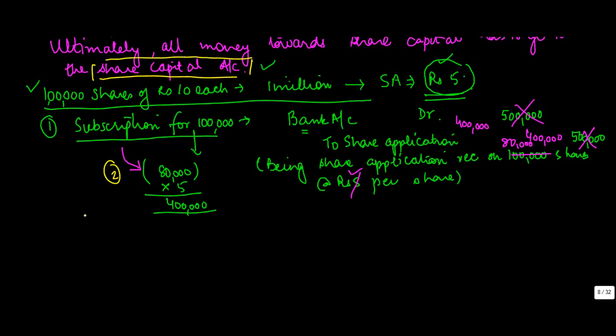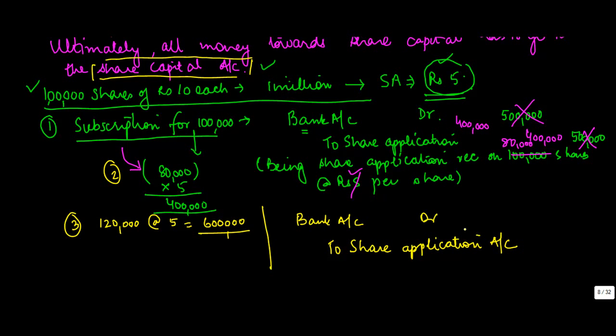Now the third situation could be you got actually money for 120,000 shares at the rate of rupees 5, which is 600,000. So in this case, what will happen, you got bank account debit to share application. So the first entry will be basically the same, right? The only difference will be you will get the number as 600,000.